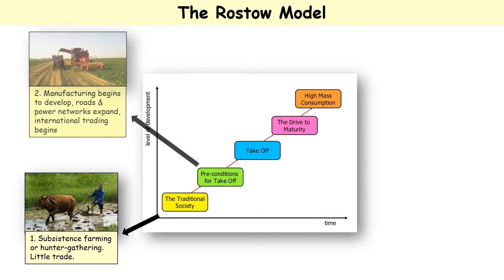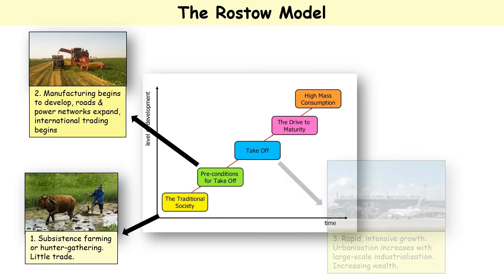Society will develop to the next stage: the preconditions for takeoff. This is where they're making some things within the country. If you make things to sell them, roads and networks for doing so will emerge. Electricity will expand across the country and international trading of these goods will then take place.